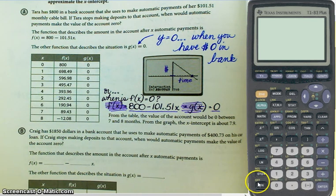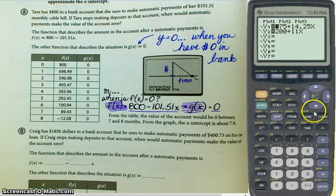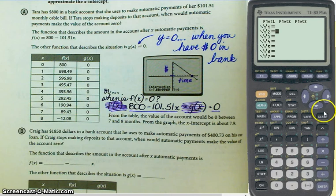We're going to go through it on the calculator also, to kind of continue developing our calculator skills. So go to your calculator and turn it on. We're going to go to y equals. Let's clear that out. Our two equations are this one: 800 minus 101.51x. And our second equation is just y equals zero.